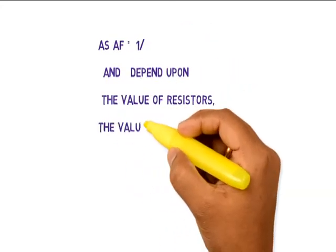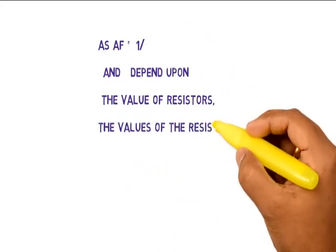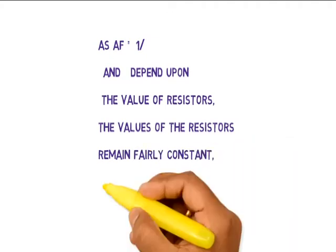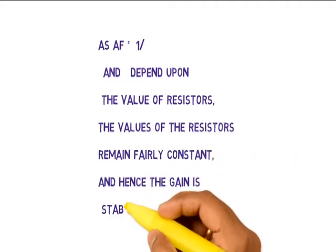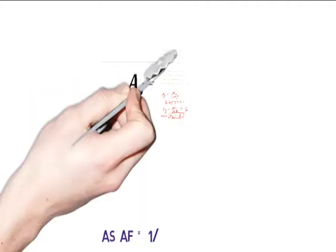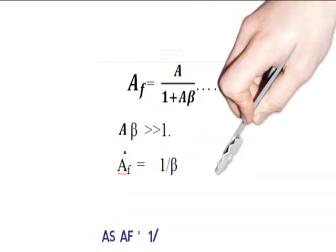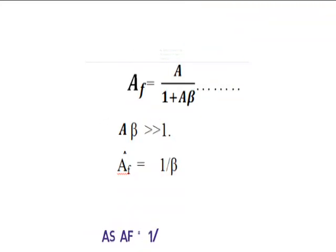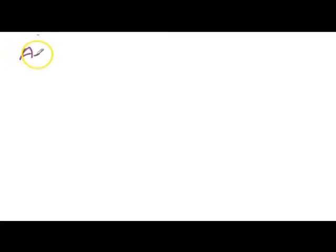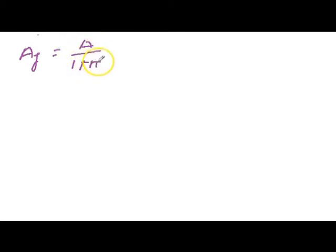Since AF equals 1 over β and β depends upon the resistive network, AF becomes independent of the transistor parameters, transistor properties, and the transistor's internal gain.